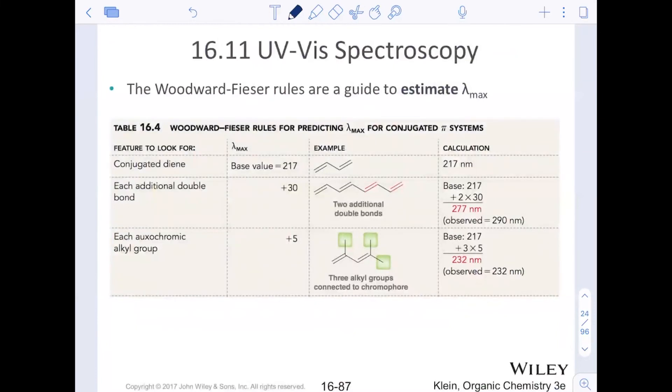So they estimate the lambda max. It's not a perfect estimation, but it's pretty gosh darn close. For a conjugated diene, there are five rules that we're going to do. Here's the first three. This is table 16.4. All conjugated systems, we're going to talk about the simplest one, which is 1,3-butadiene, two double bonds conjugated. They have a base value of 217, so we'll always start with 217 nanometers. For each additional double bond, one, two here in this example, we'll add 30. So if you take the base 217 and in this structure of our octa tetraene, four conjugated pi bonds here in this molecule, we would say two times 30. So the observed or the predicted lambda max was 277 when we add 60. Observed is 290. That's pretty close.